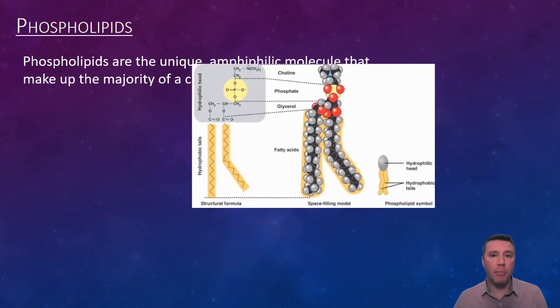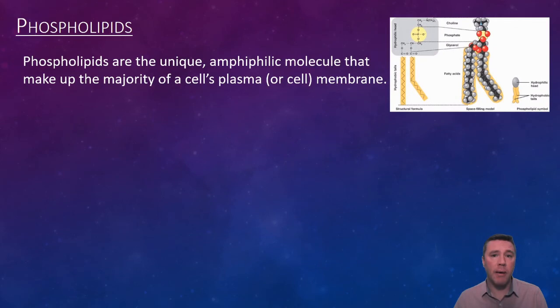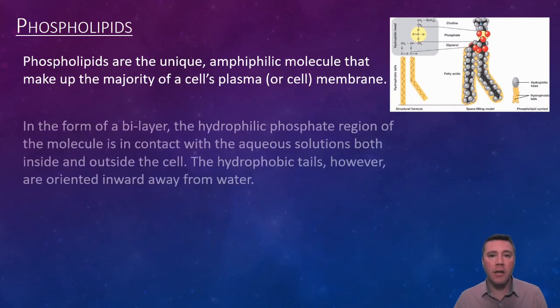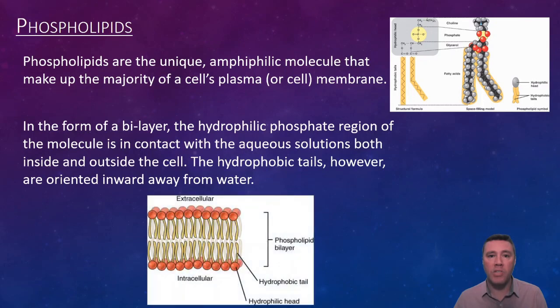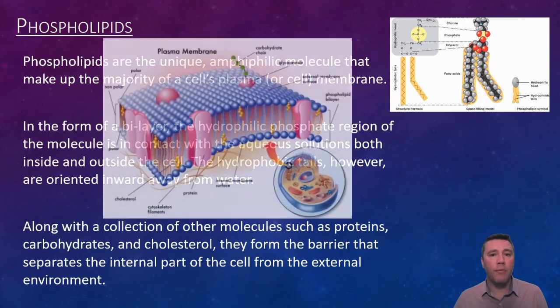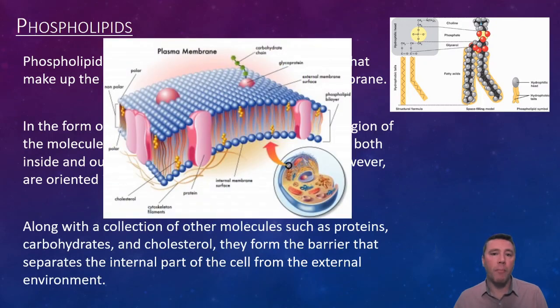When two layers of phospholipids are used to construct a cell's membrane, the hydrophilic head is in contact with the aqueous internal environment of the cell, as well as the aqueous external environment. The central region of the membrane, where the tails are found, are oriented away from water, establishing a hydrophobic core of the membrane that is largely water-free. It is this phospholipid bilayer, along with a number of other molecules, that form the boundary between the external environment and the inside of the cell with its contents.